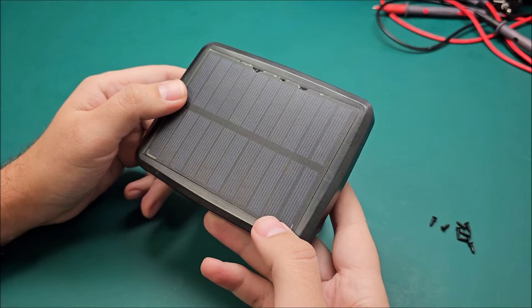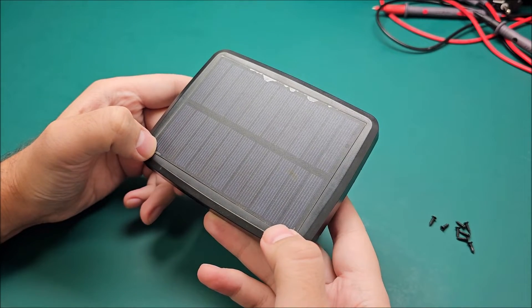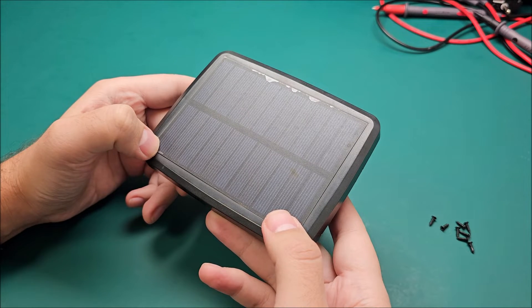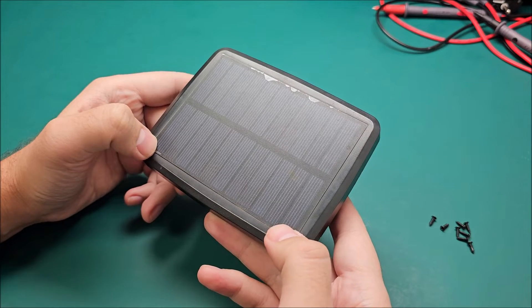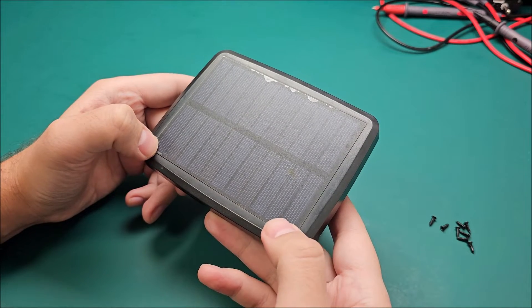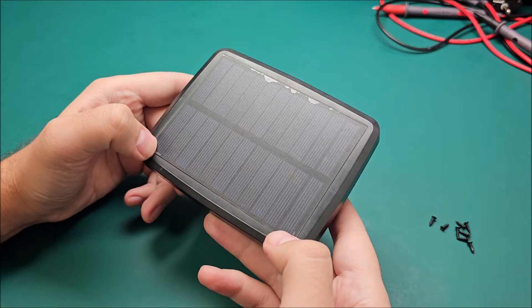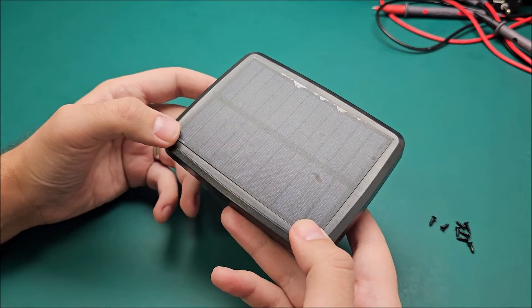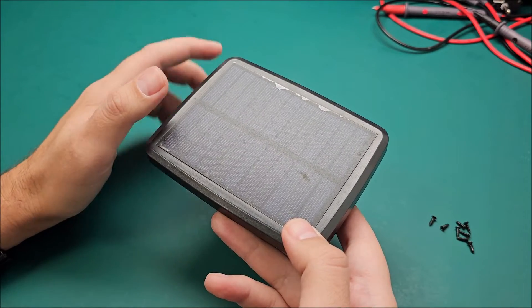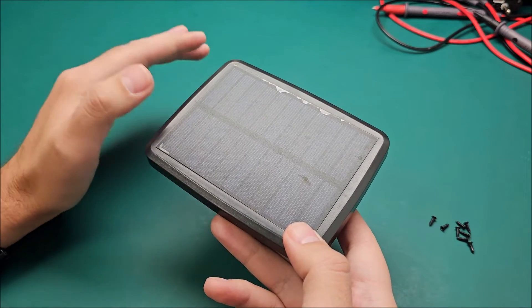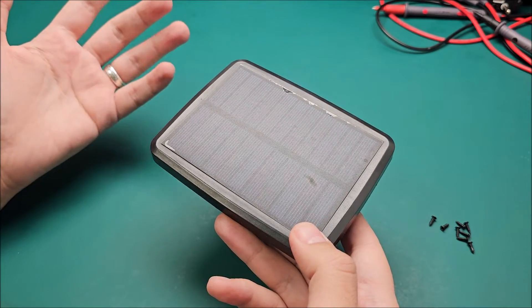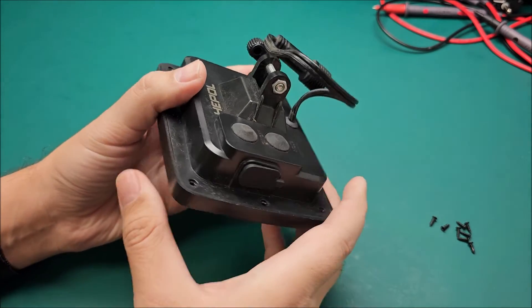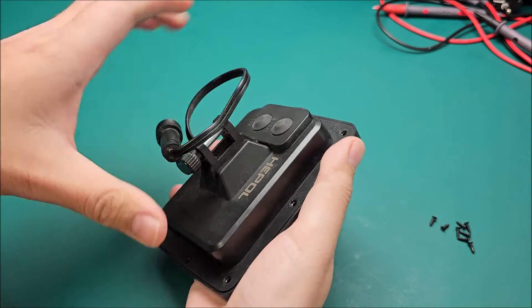That will actually be a separate video in itself, which will show you how to charge power banks from solar panels the easiest way and even charge lithium 18650 cells where there's barely any light outside. It will still continue to charge at a really low current. That will be a separate video again, you can find that one in the description also.